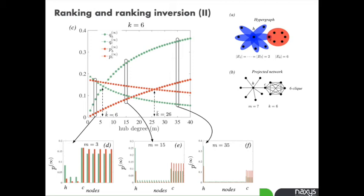On the other hand, for intermediate values, from 6 up to 26, there is a ranking inversion. Node C is first ranked in the hypergraph because orange squares are above orange circles, while on the clique projection network it's node H which is first. The green circles are above the green squares.